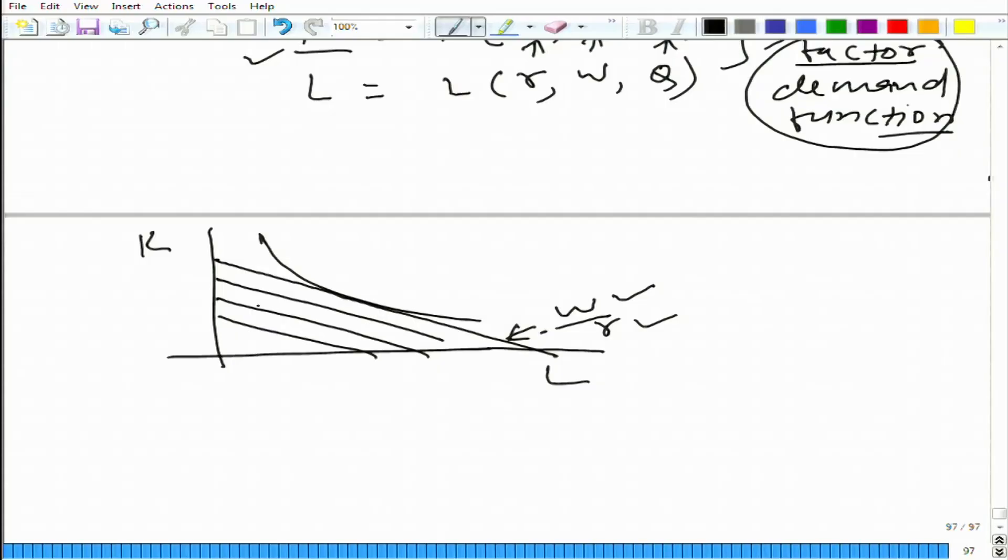So, let's say for some reason W or R changes. What would happen? We no longer have the iso-cost map looking like this. Let's say if W goes up and R remains the same, what will happen? The new iso-cost line will look steeper and we will probably end up here. Earlier we were here and we ended up at a new point.